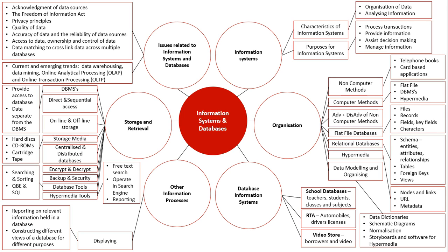Trends emerging in information systems include data warehousing and data mining, where old archived databases are mined to look at patterns and predict future trends. A key technology for this is online analytical processing (OLAP), used for analysing archived data stored in a data warehouse — when we analyse this data it is known as data mining. This helps us look at past trends and determine whether we need to change strategies to maximise business outcomes or address environmental issues.